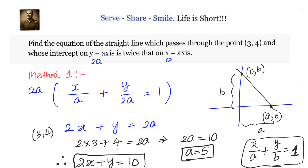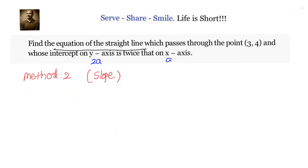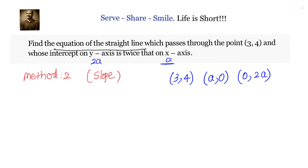This is Method 1. In Method 2, we'll use the concept of slope. We've been given that the y-intercept is twice the x-intercept, so the point on the x-axis is (a, 0) and the point on the y-axis is (0, 2a).